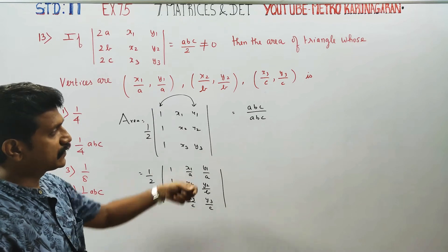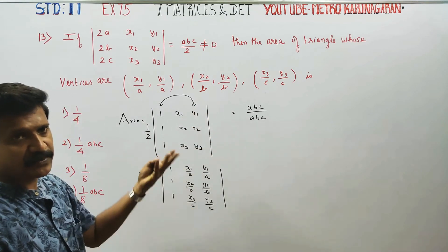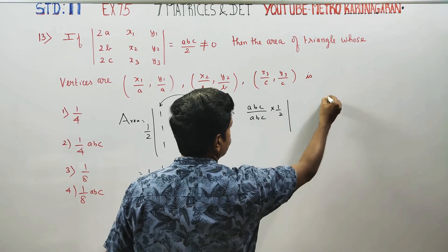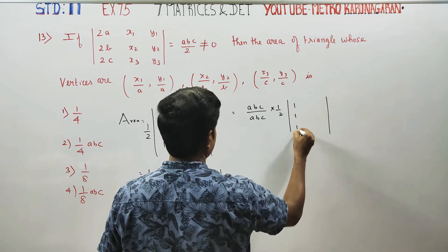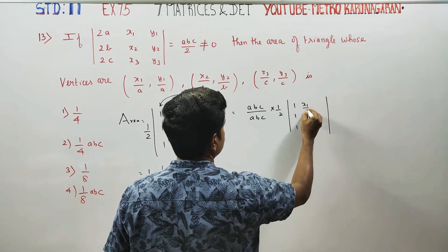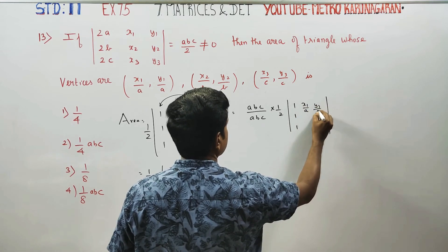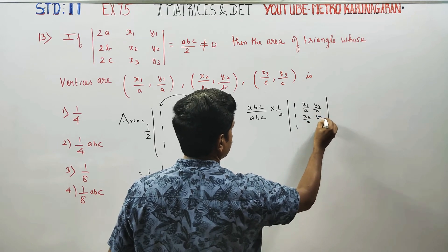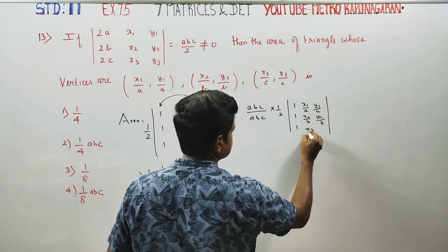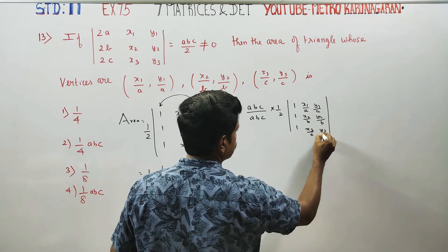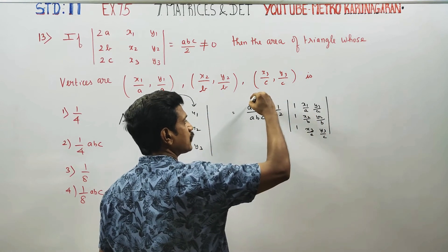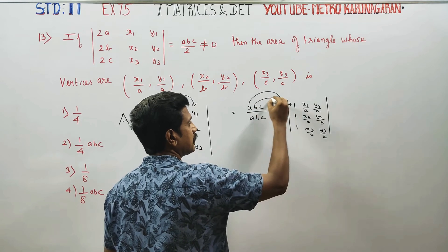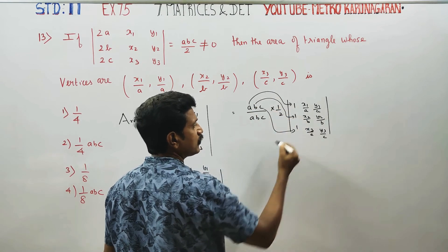What is my x1? This is x1, y1. So x1 by a, y1 by a, x2 by b, y2 by b, x3 by c, y3 by c. I'll multiply from the first row with the second row and third row.